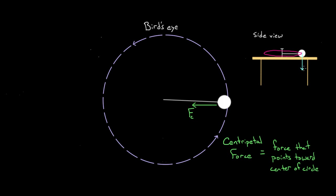It'd be like answering the question 'what force balances gravity while the ball's on the table?' with the answer 'the upward force.' Yeah, we knew it had to be an upward force, but that doesn't tell us what force it is. Similarly, just saying 'the centripetal force' just tells us what direction the force points. It doesn't tell us what type of force it is. It'd be better to say it's the normal force. And we could do better over here too — instead of just saying the centripetal force, we could say what kind of force it is. It's got to be one of the forces we already know about.